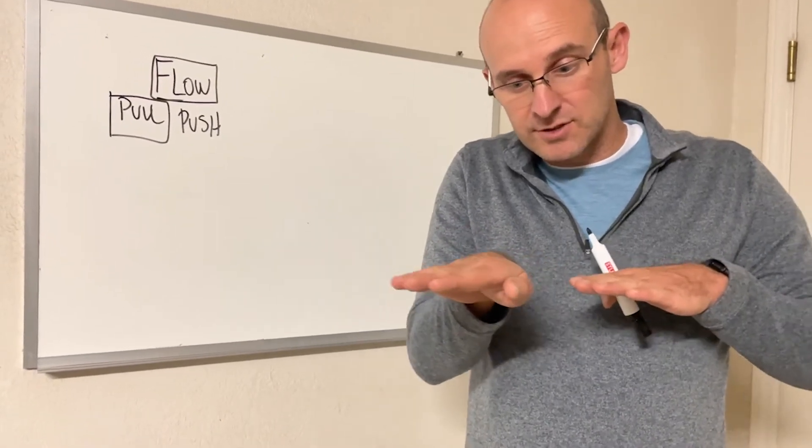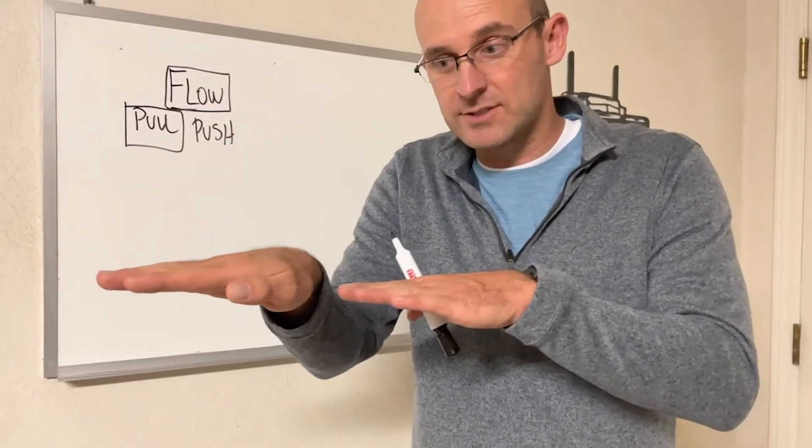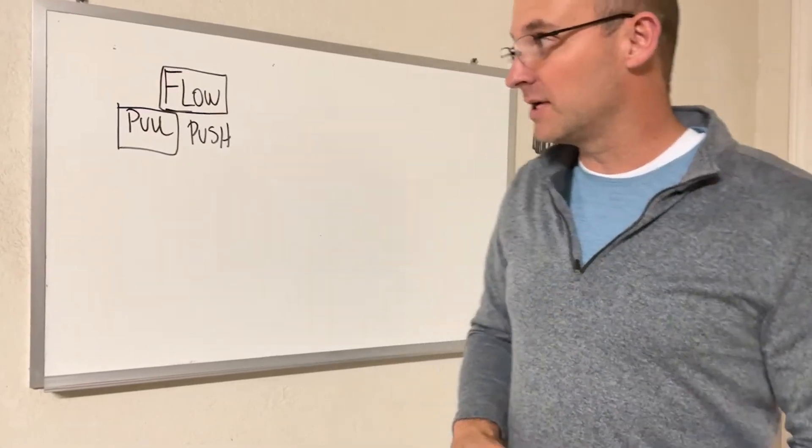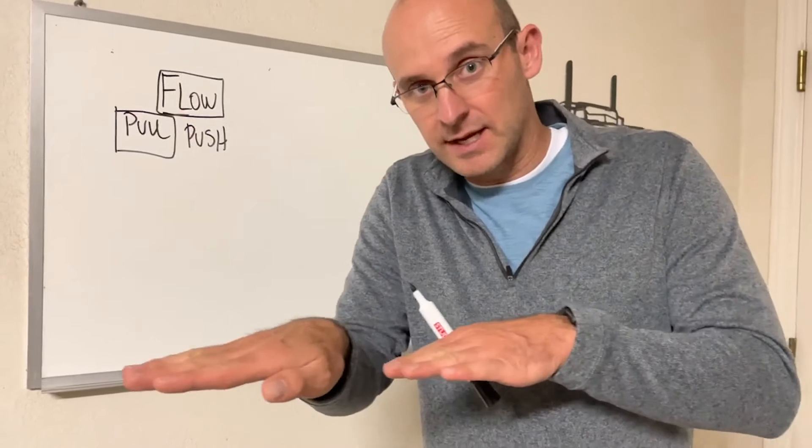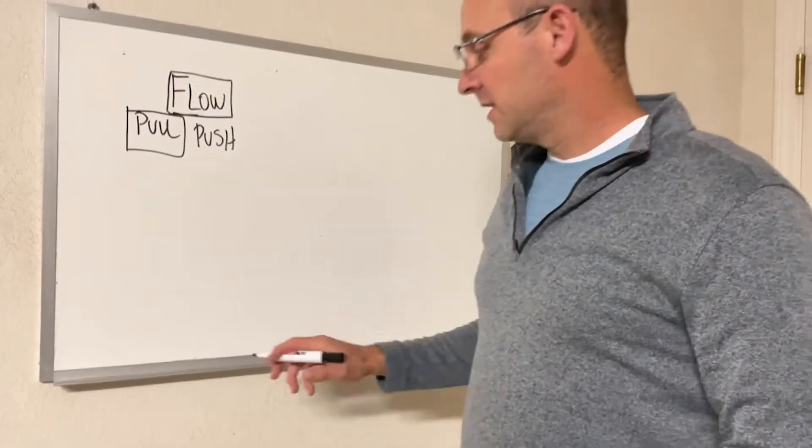When this contractor goes a little faster, this one can go faster. When they slow down, it goes a little slower. That's pull. Flow: they're both going at the same speed.